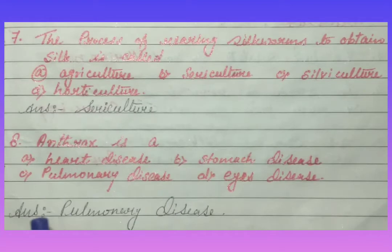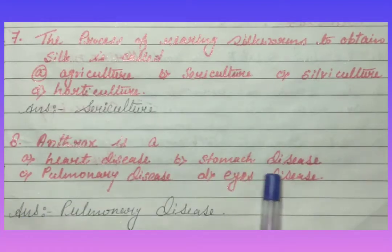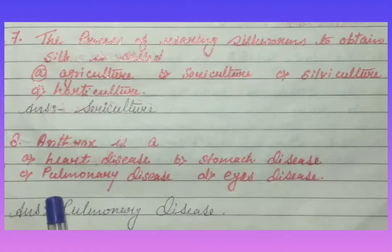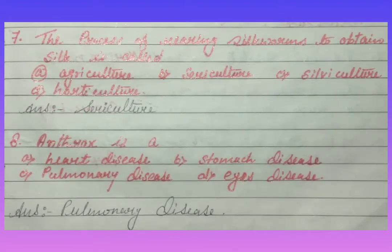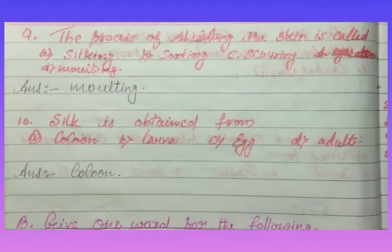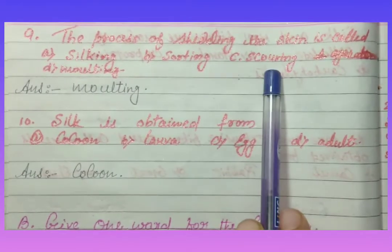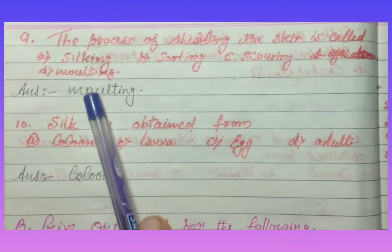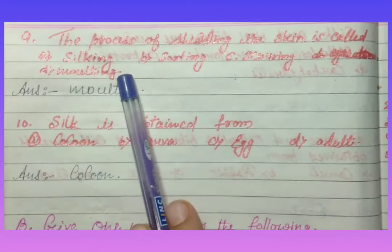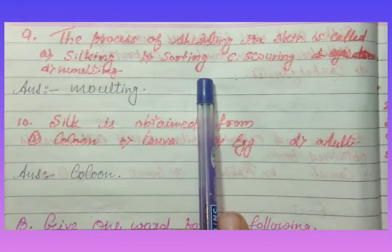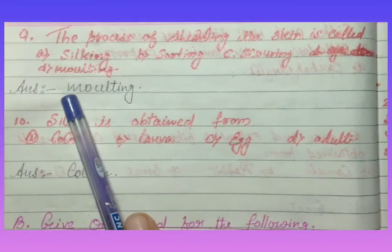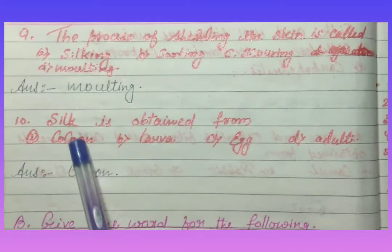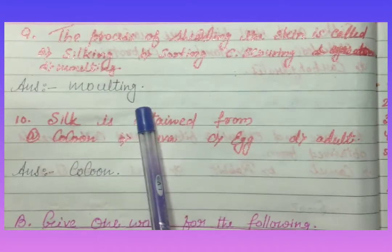Anthrax is a heart disease, stomach disease, pulmonary disease, or skin disease. The answer is pulmonary disease. The process of shedding the silk is called shorting, scoring, molting, or silking. The answer is molting.